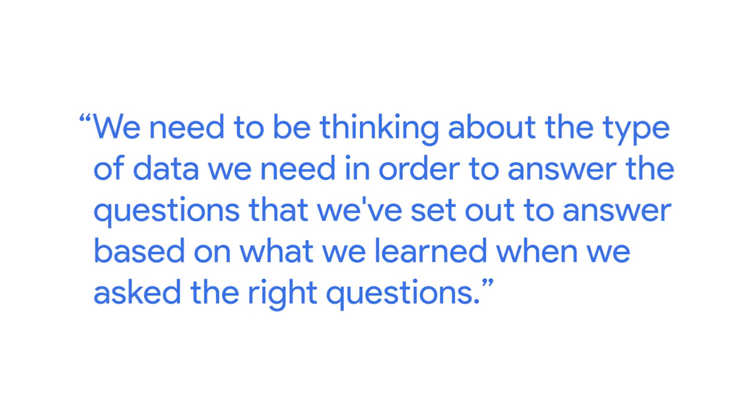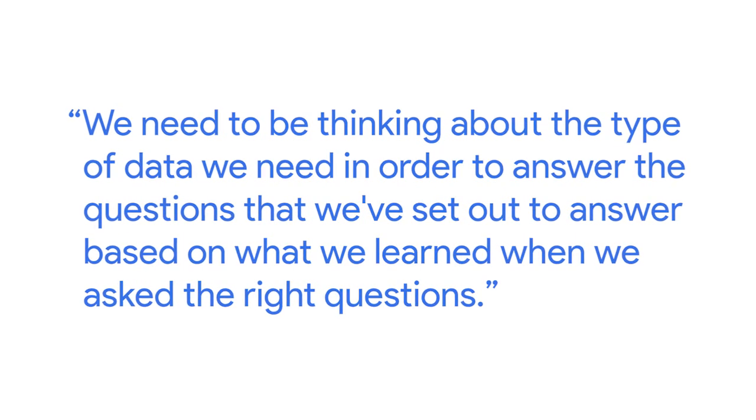After you've asked all the right questions and you've wrapped your arms around the scope of the analysis you need to conduct, the next step is to prepare. We need to be thinking about what type of data we need to answer those key questions. This could be anything from quantitative data or qualitative data. It could be cross-sectional or points in time versus longitudinal over a long period of time. We need to be thinking about the type of data we need in order to answer the questions we've set out to answer. We also need to be thinking about how we're going to collect that data, or if we even need to collect it. It may be the case that we need to collect this data brand new, and so we need to think about what type of data we're going to be collecting and how.